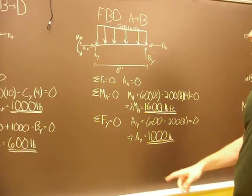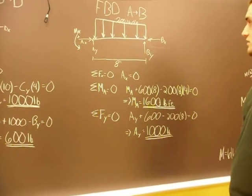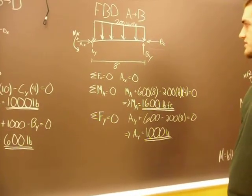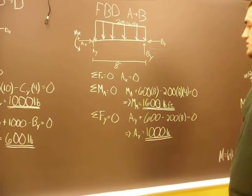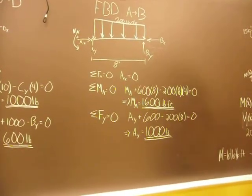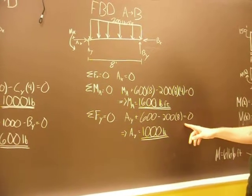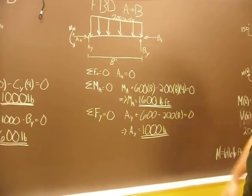And then you do your sum of your forces in the Y. You have your AY acting up, so it's positive. Plus your BY, which is 600 acting up, minus your total load acting down, which is 200 times 8. And your AY comes out to be 1000 pounds.